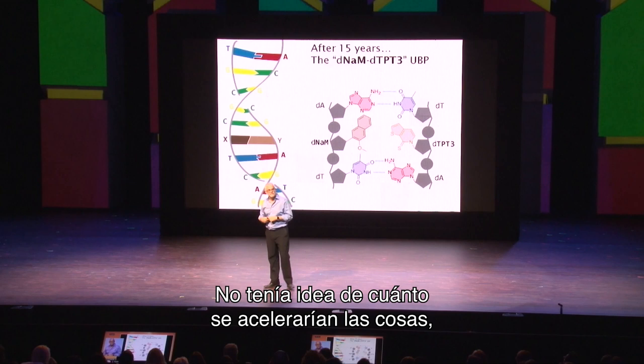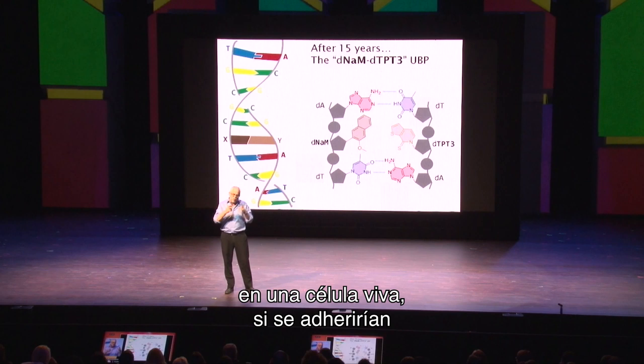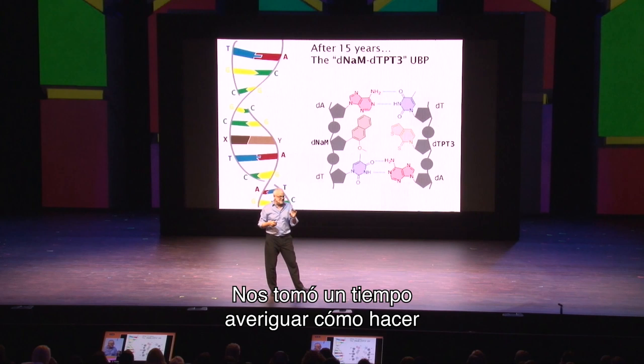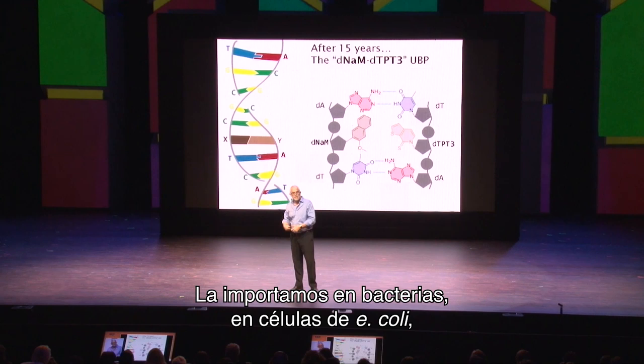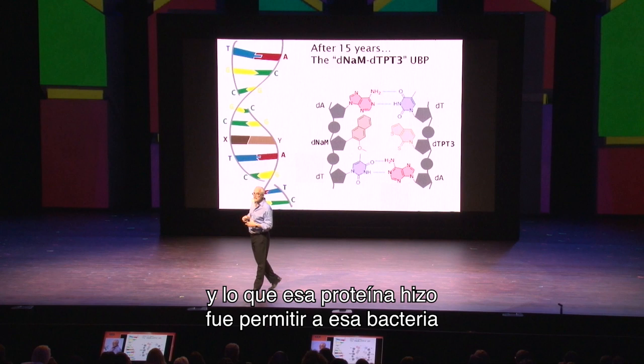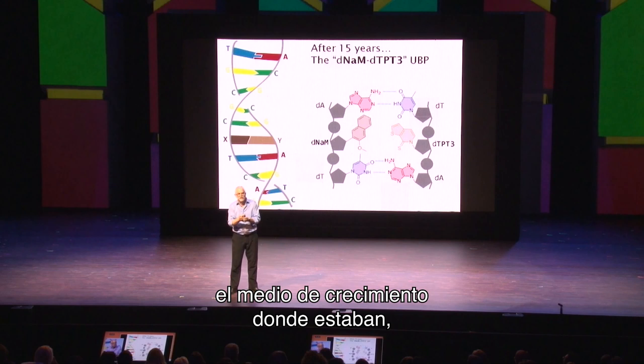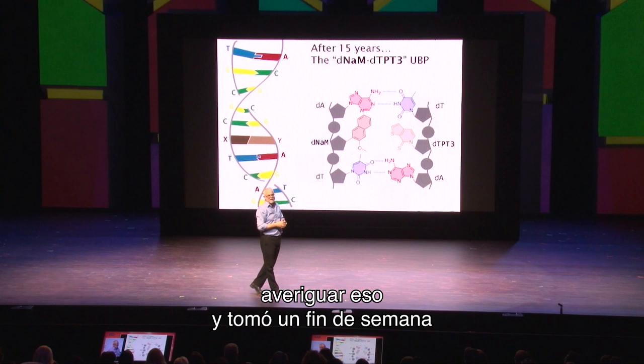I had no idea how fast things were about to accelerate. We asked: could we put these into a living cell? Could we get a living cell to hold on to these and use them as increased information? It took us a little while to figure out how to get these new letters — let's call them X and Y — into a cell. The way we ultimately solved that was by stealing a protein that does a similar kind of thing in algae and importing it into an E. coli bacterium. That protein allowed us to add X and Y to the growth media, and then that protein would grab hold of them and bring them into the cell. That took about a year to figure out, and then about a weekend to find out that it worked.